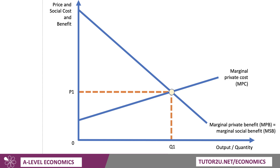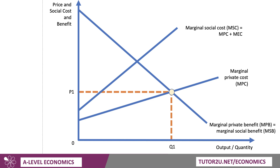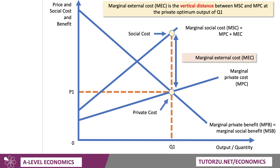With negative production externalities, the marginal social cost (MSC), which equals private cost plus external cost, will be higher than the private cost. I often draw this curve as diverging because the external costs of production tend to get bigger — the sheer volume of waste and pollution gets bigger at higher output levels. So at Q1, there's a gap between the social cost and the private cost, and that gap is the marginal external cost — the vertical distance between MSC and MPC at output Q1. There's also a triangle to the left which we'll come back to.